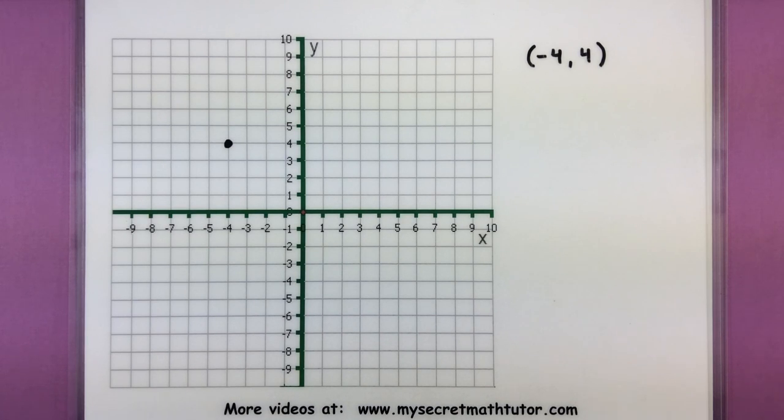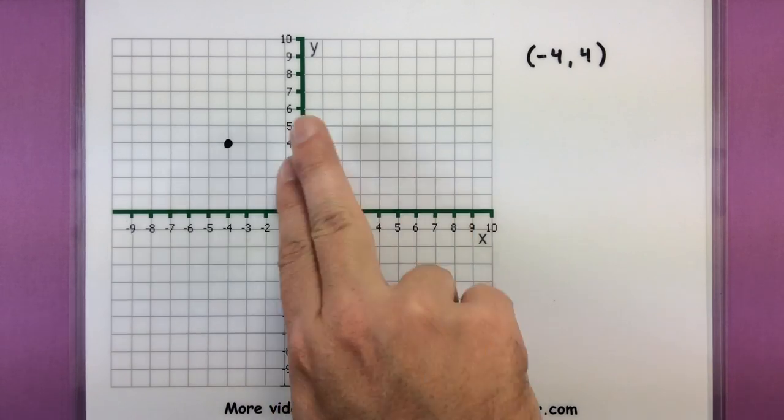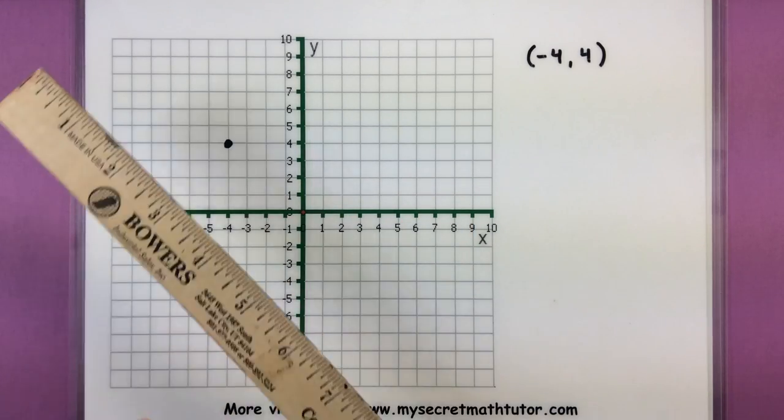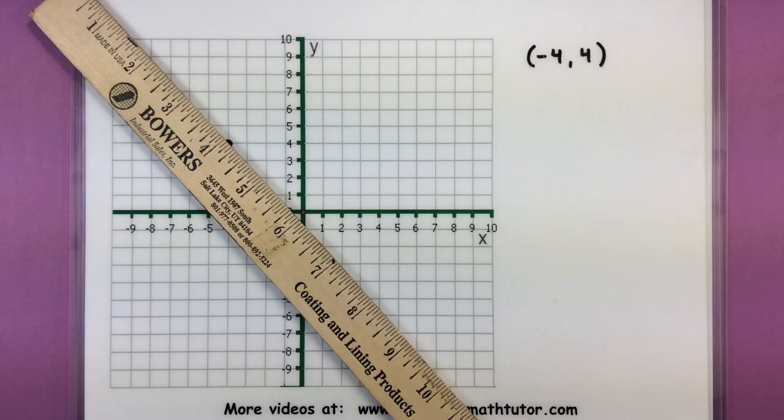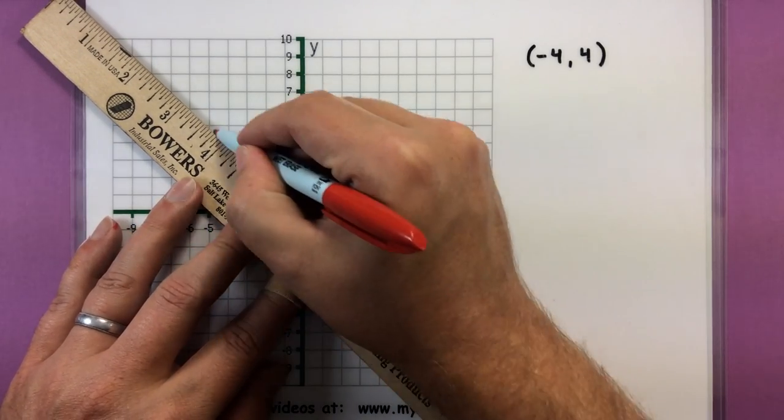And for our angle of course we want to imagine starting along this x-axis and sweeping it out until it goes through that point. So our ray will start at the origin, go through our point, and it'll look something like that.